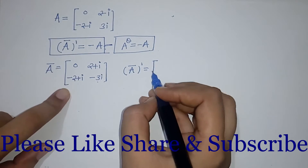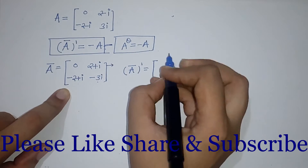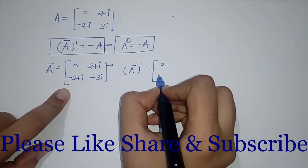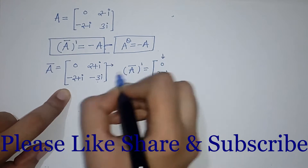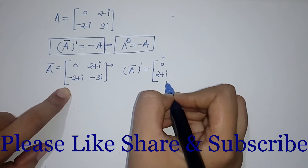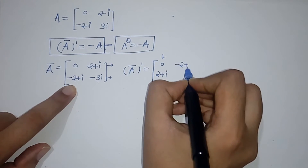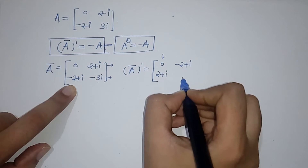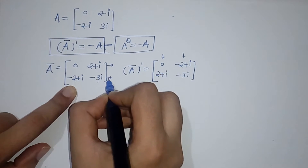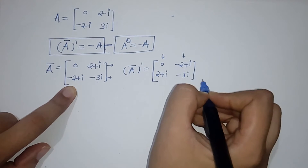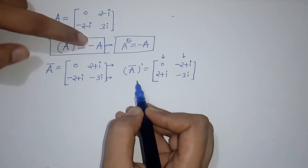Next, we take the transpose of A-bar. We write each row as a column: the first row [0, 2+i] becomes the first column, and the second row [2+i, minus 3i] — wait, we write the first row [0, 2+i] as the first column, and the second row elements form the second column, giving us the transpose of the conjugate matrix.